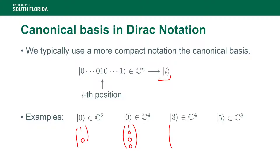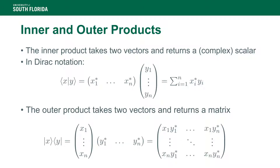Another counterintuitive fact: |3⟩ does not have three as a coefficient — it's just the fourth vector of the canonical basis, indexed zero, one, two, three. And |5⟩ is the sixth vector of the canonical basis. These are a few examples of what this notation means.